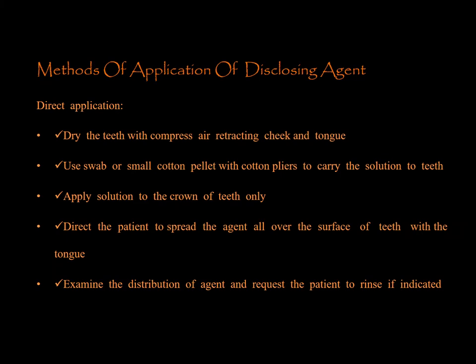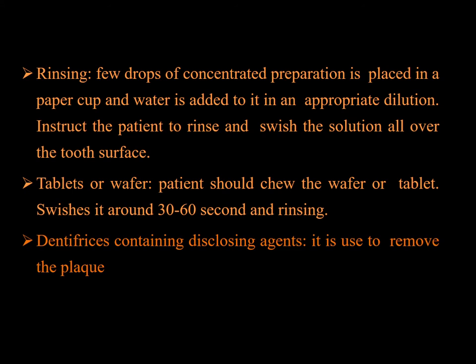Methods of application of disclosing agent: For direct application, dry the teeth with compressed air, retract cheek and tongue, use a swab or small cotton pellet with cotton pliers to carry the solution to the teeth, apply to the crown of the teeth, then direct the patient to spread the agent over the area with the tongue, examine distribution, and request the patient to rinse if indicated. For rinsing, a few drops of concentrated preparation are placed in a cup, water is added in appropriate dilution, and the patient rinses and swishes. For tablets or wafers, the patient should chew the wafer for 30 to 60 seconds then rinse. Dentifrices containing disclosing agents are now available and are very useful for removing dental plaque.